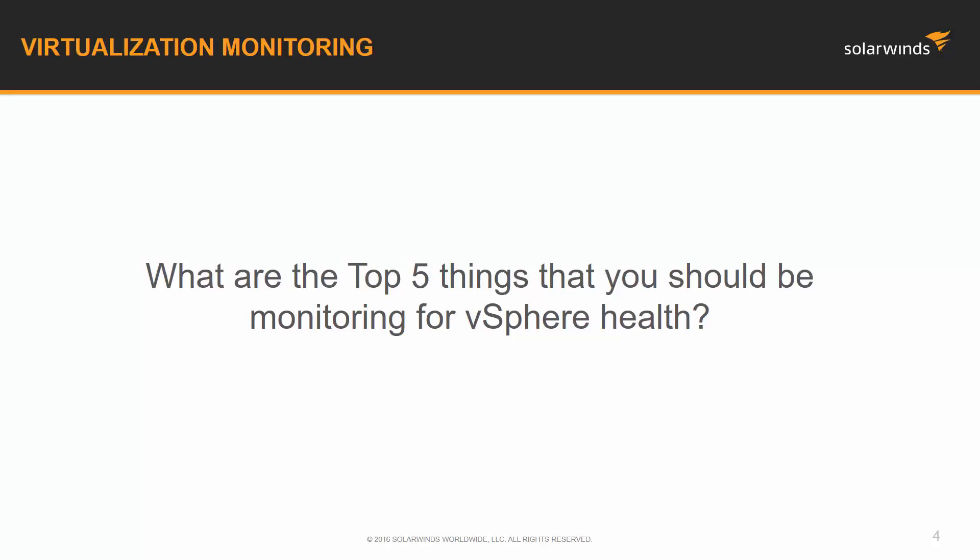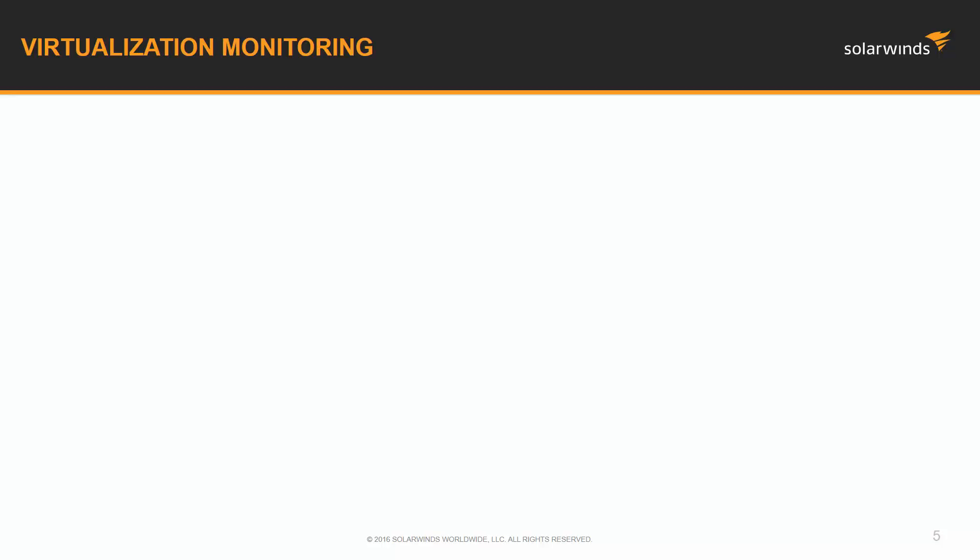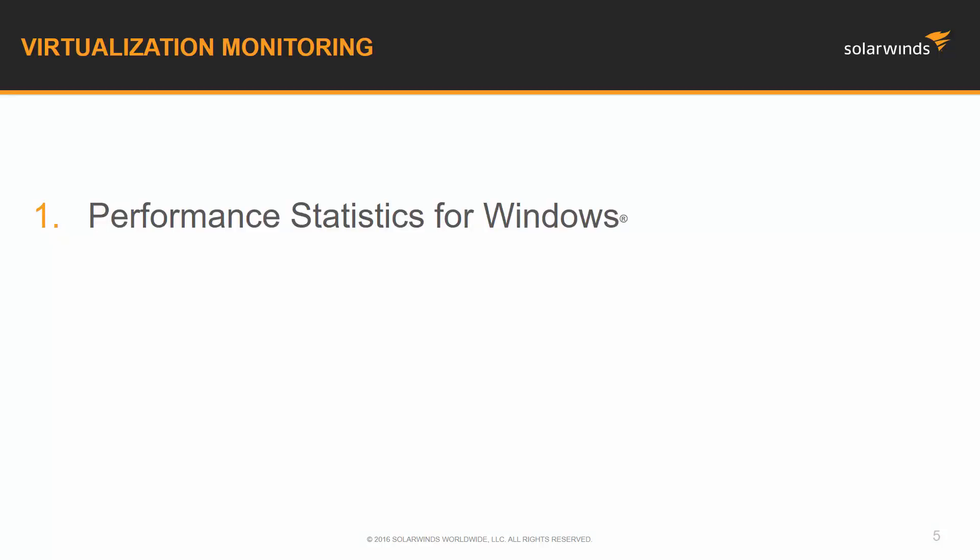What are the top five things you should be monitoring for your vSphere health? They would be different from — or possibly related to — how you would check on a Windows server. There could be a little overlap. First: performance statistics for Windows. This affects our guest-level operating system and our ability to know exactly what's going on with them. Every application is different, so knowing if you're getting the performance you need out of that system is really key when it comes to virtualization.